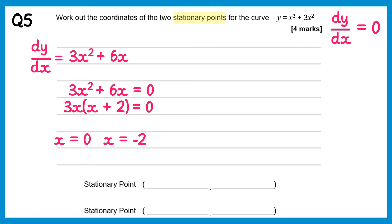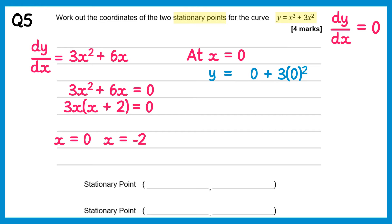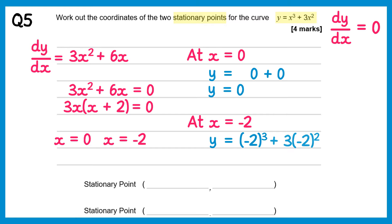We now need the y coordinates, substituting each x value back into the original equation. At x equals 0: y equals 0³ + 3(0²) = 0. So the first stationary point is (0, 0). At x equals negative 2: y equals (−2)³ + 3(−2²) = −8 + 12 = 4. So the second stationary point is (−2, 4).